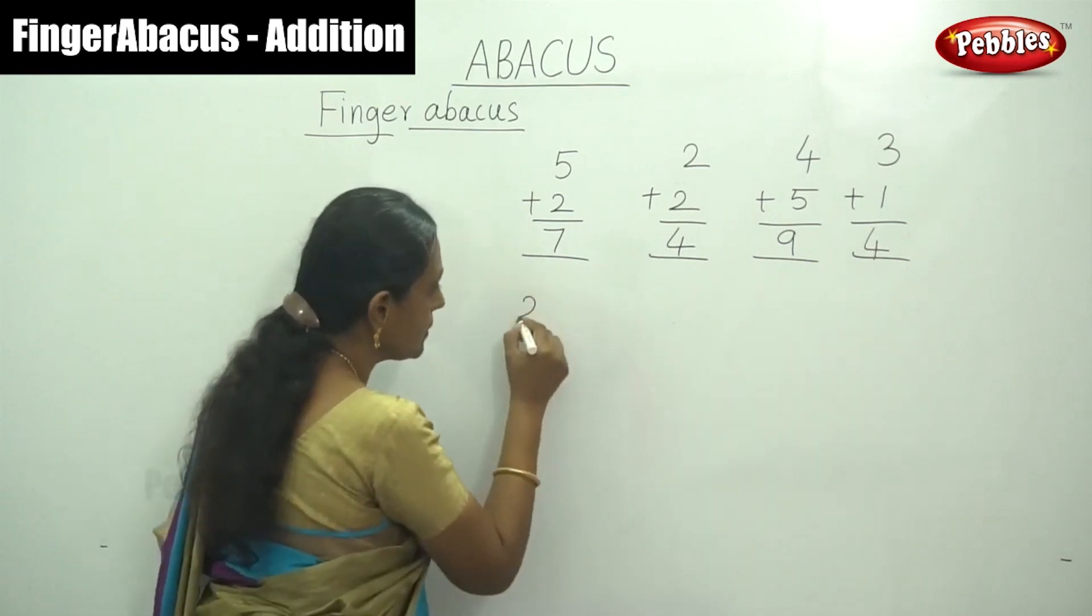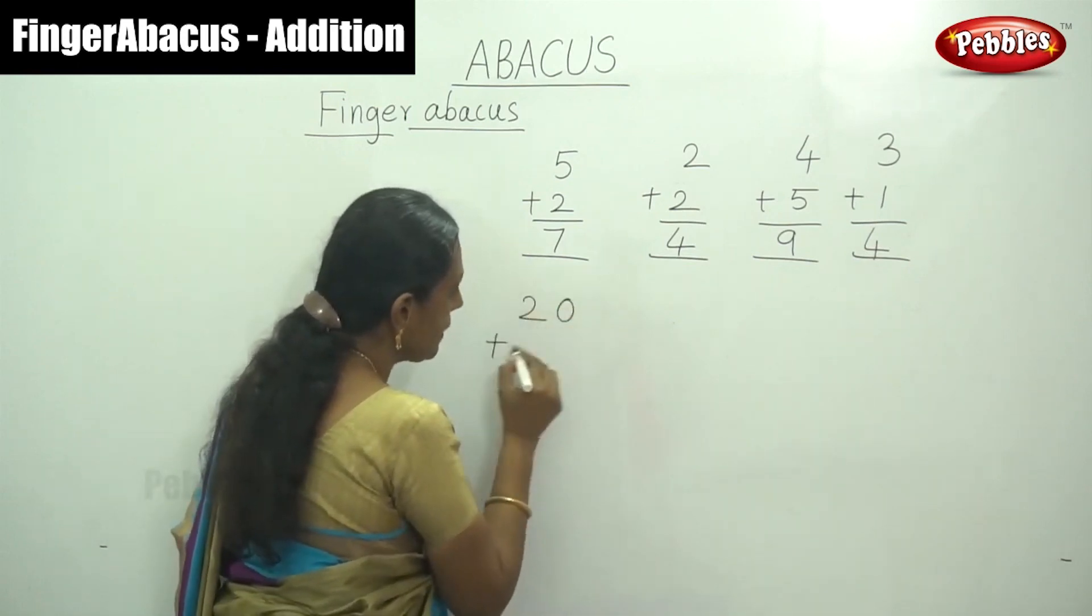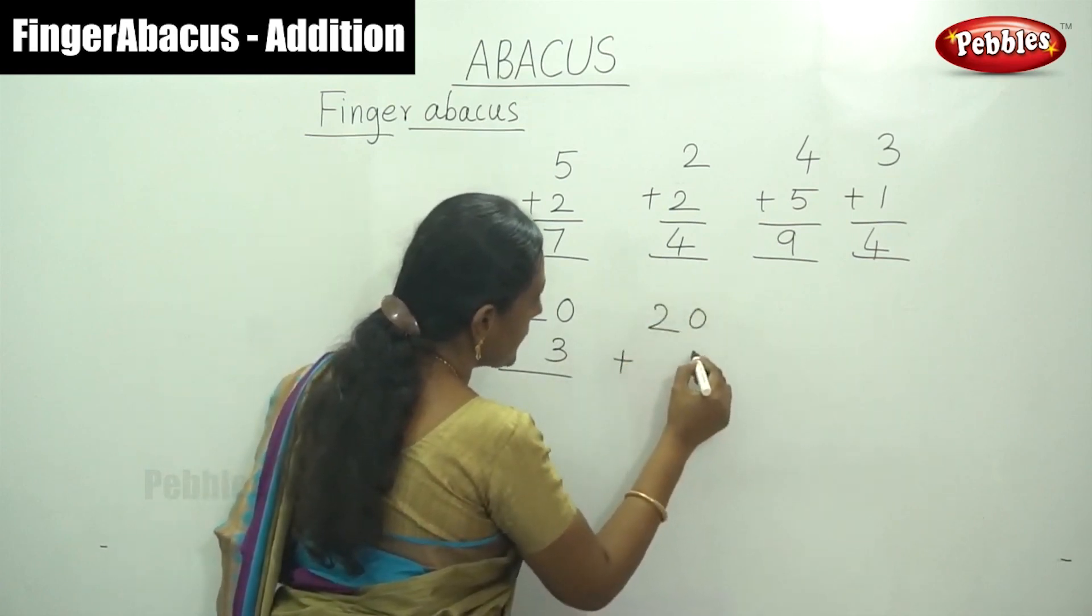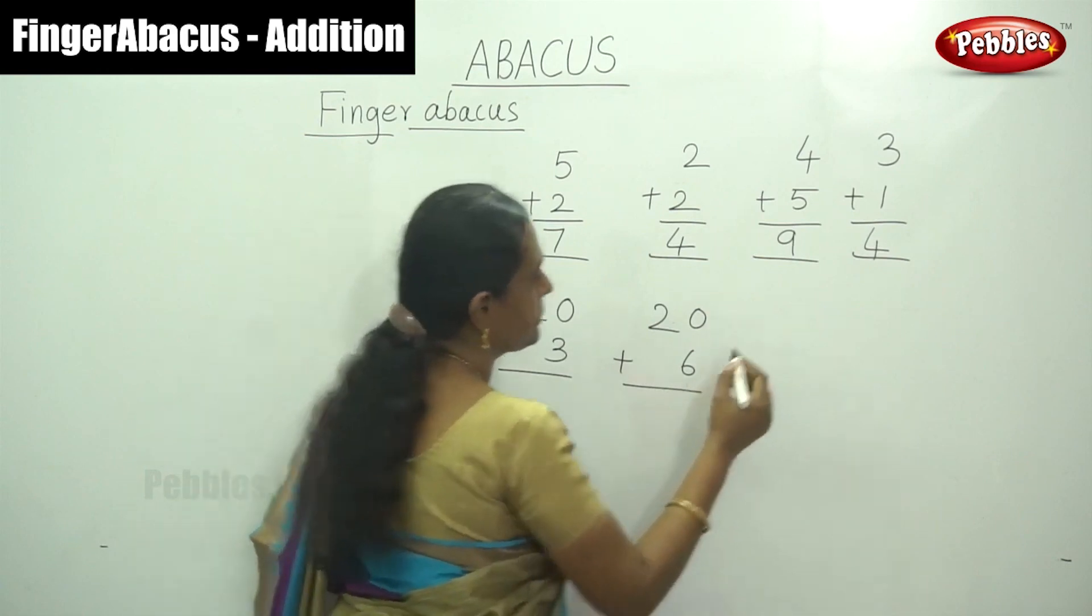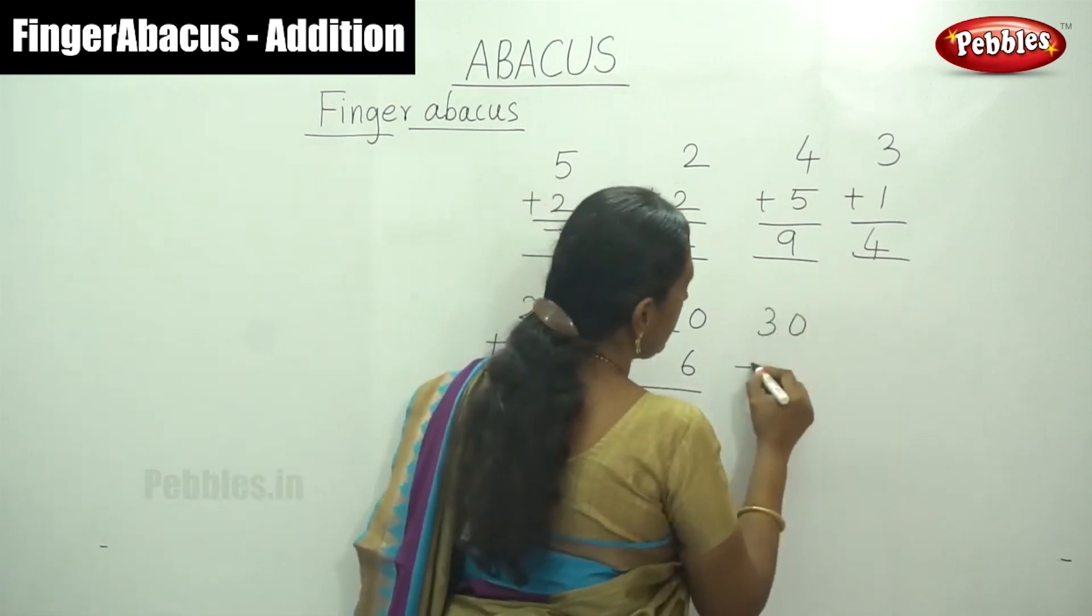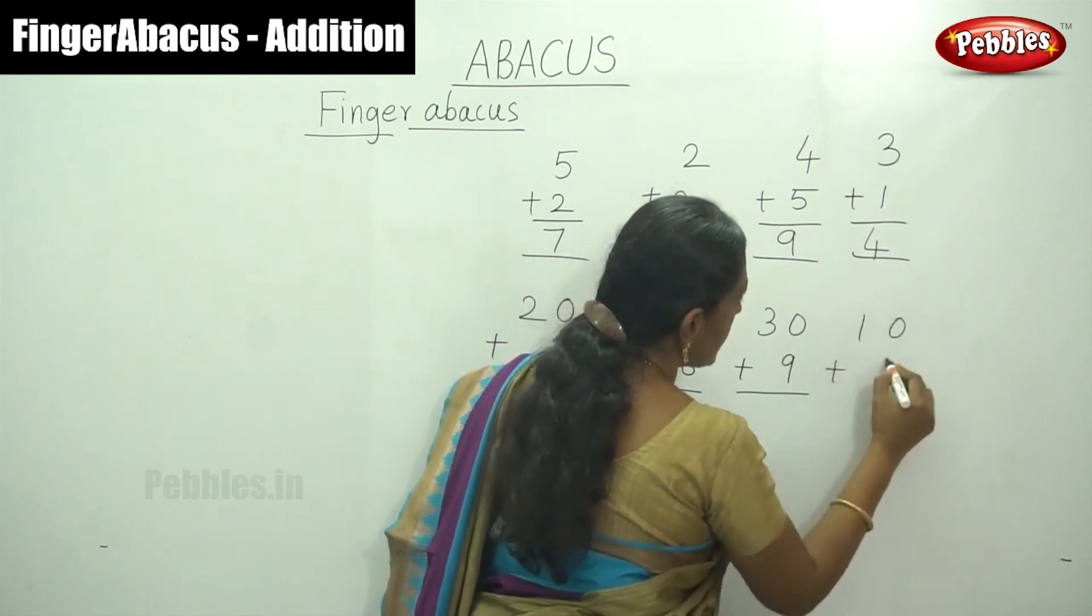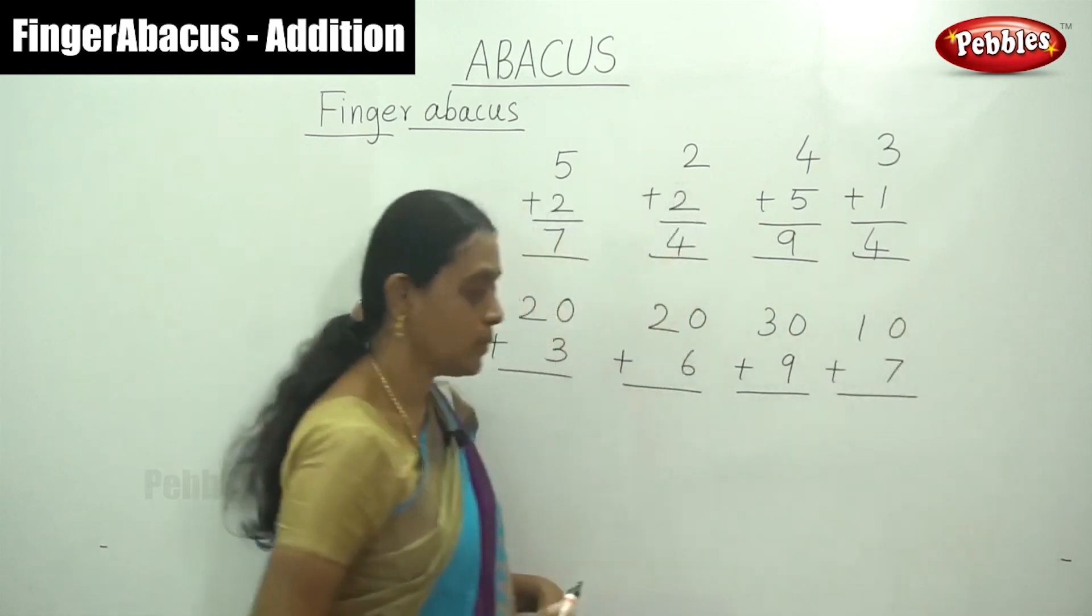Let me see. That is 20 plus 3, 20 plus 6, 30 plus 9, and 10 plus 7.